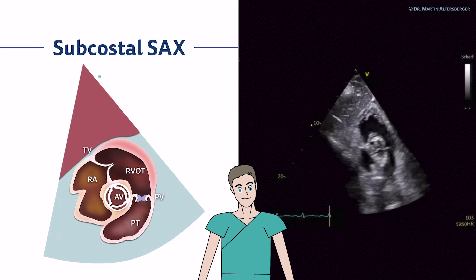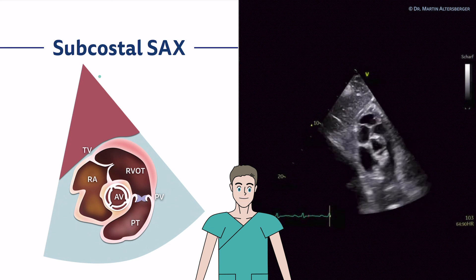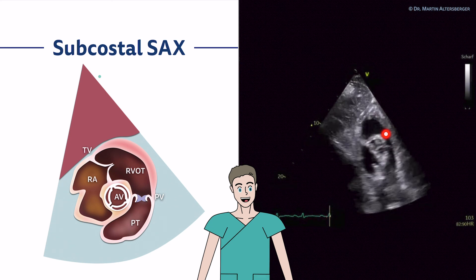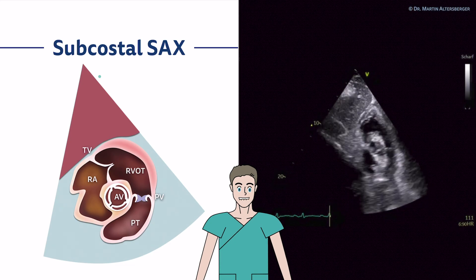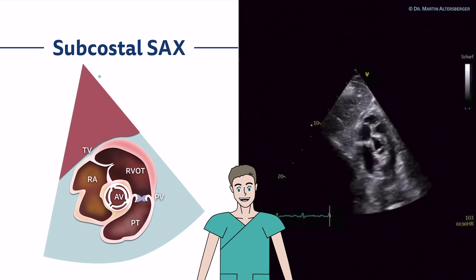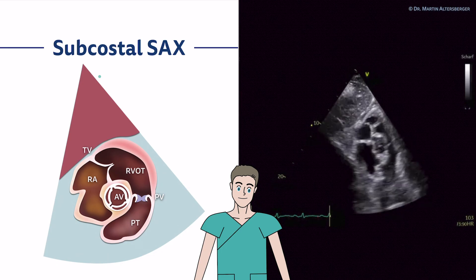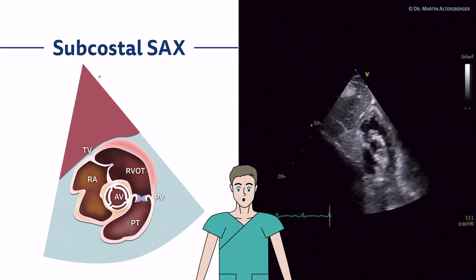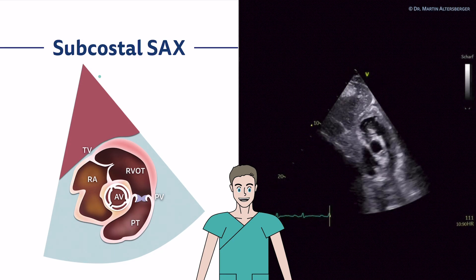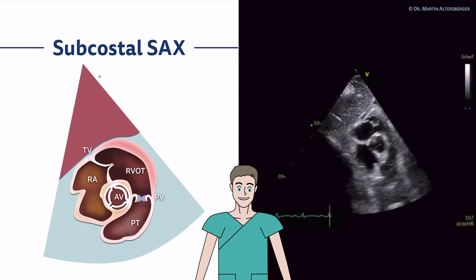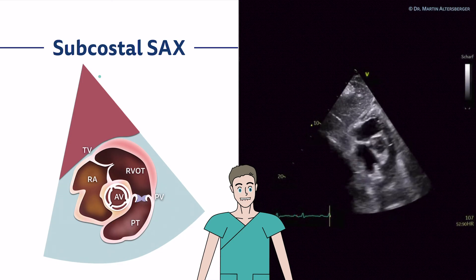In an optimal image you can see the interatrial septum, the left atrium, the right atrium, the tricuspid valve, the right ventricle, the RVOT, the pulmonic valve, the pulmonic trunk, and the right and left pulmonary arteries. This view gives a really nice overview. You can even see that the aortic valve is tricuspid, and you can measure the pulmonary acceleration time using pulsed-wave Doppler. This is an important view, especially when the parasternal views are not possible or of poor quality.